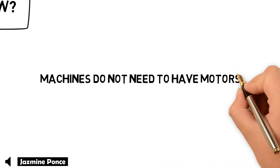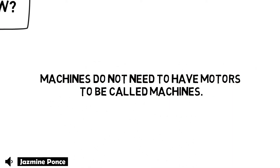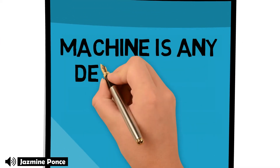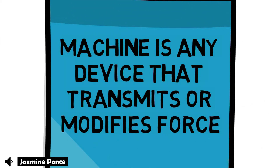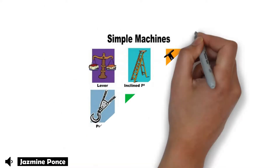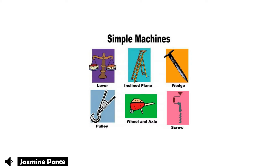Machines do not need to have motors to be called machines. In fact, a machine is any device that transmits or modifies force. Simple machines include the lever, inclined plane, wedge, pulley, wheel and axle, and screw.